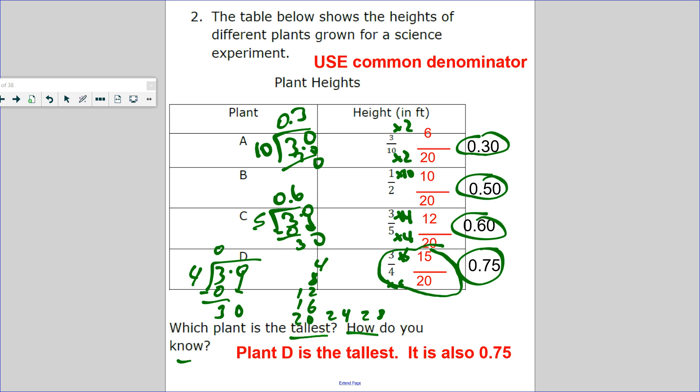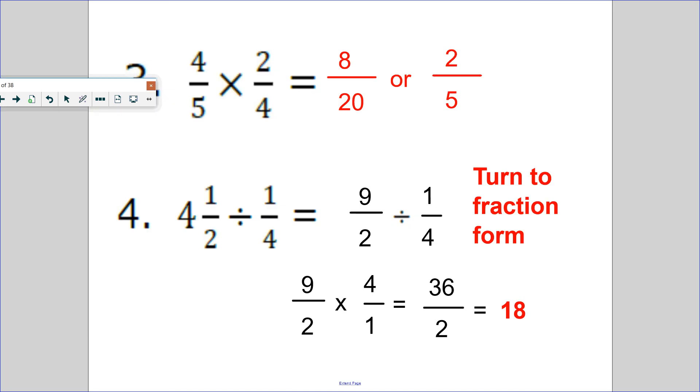If not, 3 divided by 4. Can 4 go into 3? Zero times. Can 4 go into 30? Seven times, which is 28. 30 minus 28 is 2. Can 4 go into 20? Five times. So 75 hundredths.